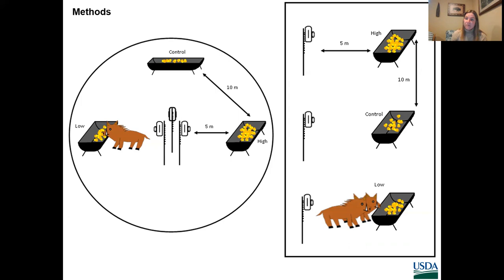On night six, we presented a cafeteria-style preference test of approximately 11 kilograms of corn per treatment for six nights. The three treatments in Alabama were control or untreated, 0.5% or 5,000 milligrams per kilogram anthraquinone, and 3% or 30,000 milligrams per kilogram anthraquinone, sprayed and dried on whole kernel corn. Based on results from Alabama, we increased the lower concentration treatment for Texas. In Texas, the three treatments were control or untreated, 1.5% or 15,000 mg/kg anthraquinone, and 3% or 30,000 mg/kg anthraquinone, sprayed and dried on whole kernel corn.